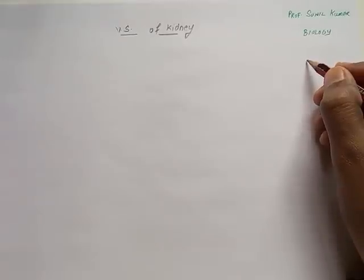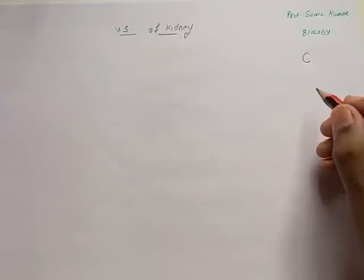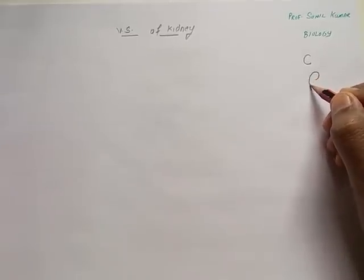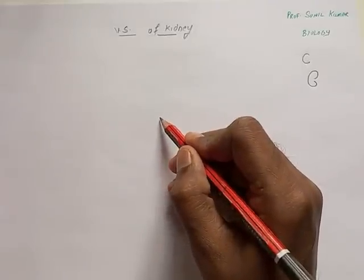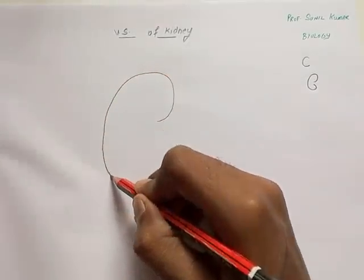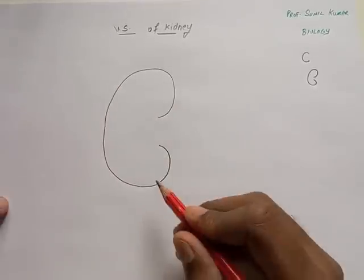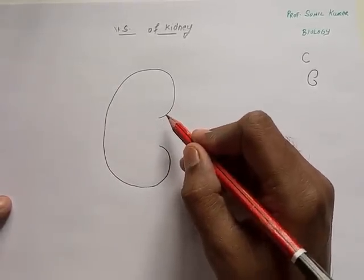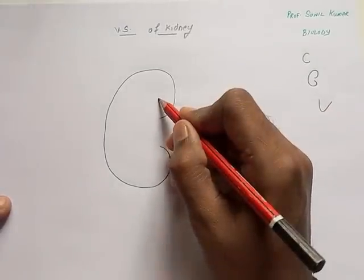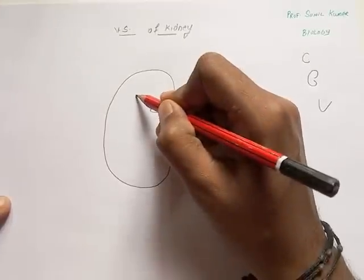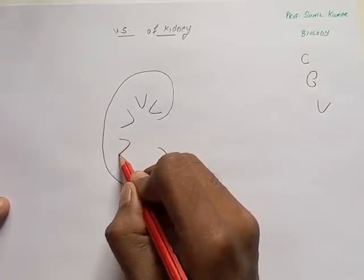For drawing the VS of kidney, we need to follow certain simple steps. First, draw the alphabet C — a little bit more open C — and put it inside. This C indicates the covering of the kidney. Now we need to go for V.